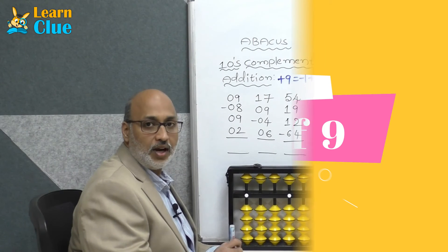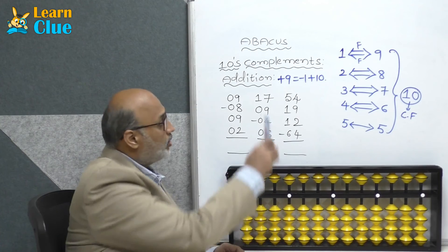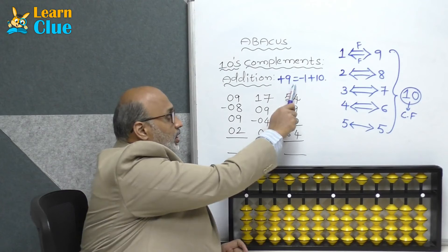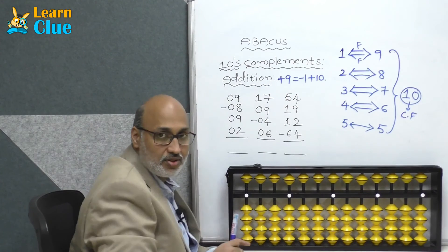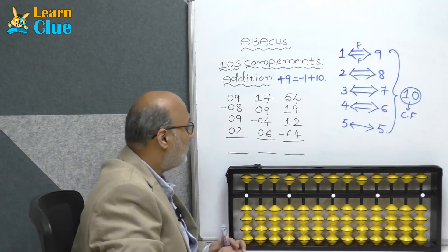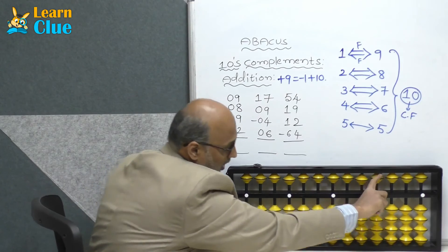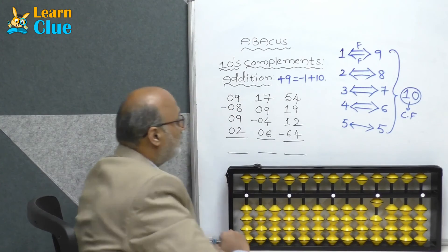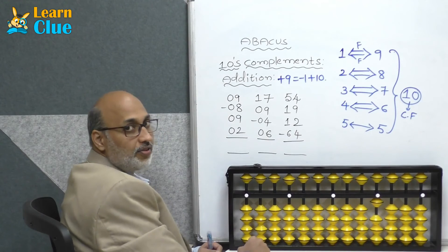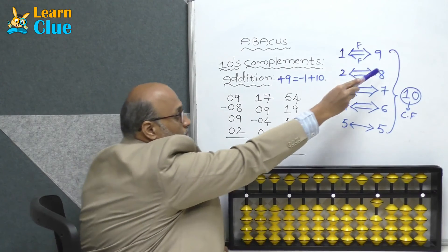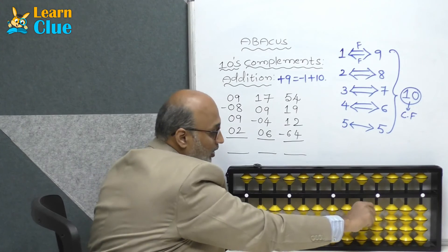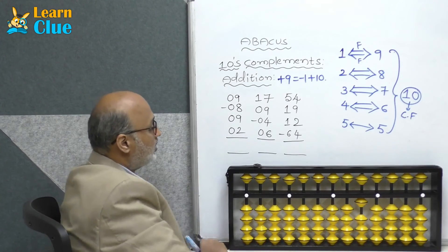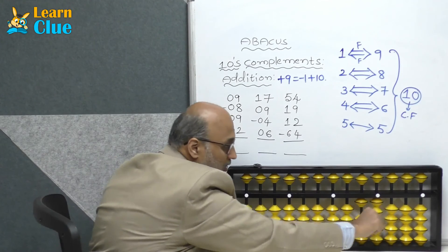Hi students, now we are going to learn about tens complements addition plus 9 technique. Always remember the technique and friends — both are quite important. Now let's see a couple of problems. Plus 9, minus 8, which is also available. Now they are asking plus 9 — who is the friend of 9? 1. So minus 1 plus 10.